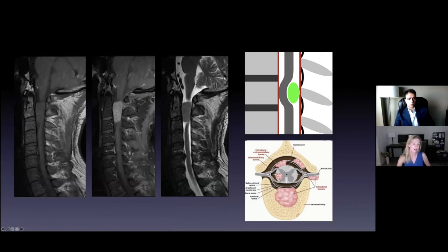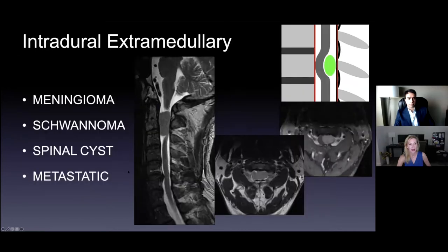Sagittal T1, T1 post-contrast with fat sat, sagittal T2. So this one — if you imagine this tumor was on this side — we have a tumor here that's compressing the cord. It's not expanding the cord, it's pushing the cord away. And we don't see any dura being tented up like it's coming from the bone, like an epidural process. So those are your choices for intradural extramedullary tumors, the main ones.